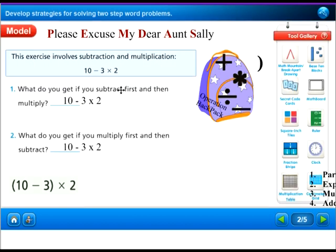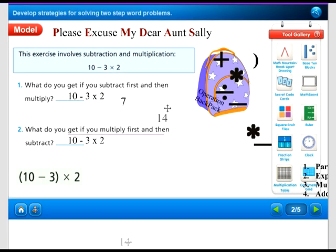This exercise involves subtraction and multiplication. Let's look at these two questions. What do you get if you subtract first and then multiply? If we subtracted first, 10 minus 3 would equal 7, and 7 times 2 equals 14. So our answer for that first one would be 14.